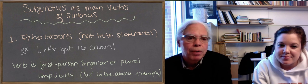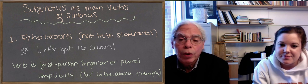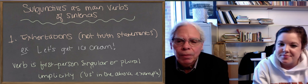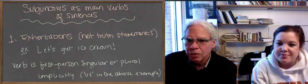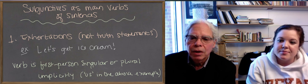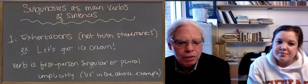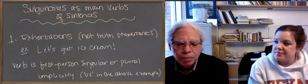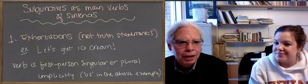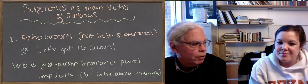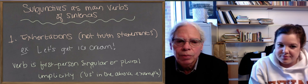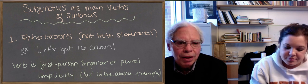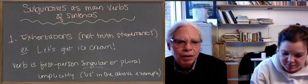The first type are what the book calls hortatory, which is the same word as exhortation in English. When you exhort somebody to do something, and in this case, it's you the speaker and someone else, or it can just be you yourself. In other words, the verb is going to be first person singular or plural in the subjunctive. It's let's get ice cream. Let us get ice cream is what's going on there.